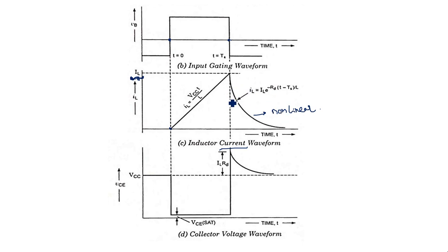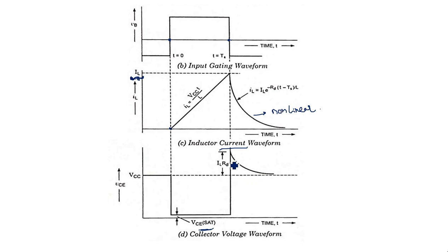To get linearity we will need one more modification of the circuit, which we will see in the next video. Regarding the output collector voltage VCE: when the inductor is charging, the output voltage across VCE is a very small voltage VCES. When the transistor comes into the OFF state there is a sudden increment, and IL·Rd is additionally added to VCC.